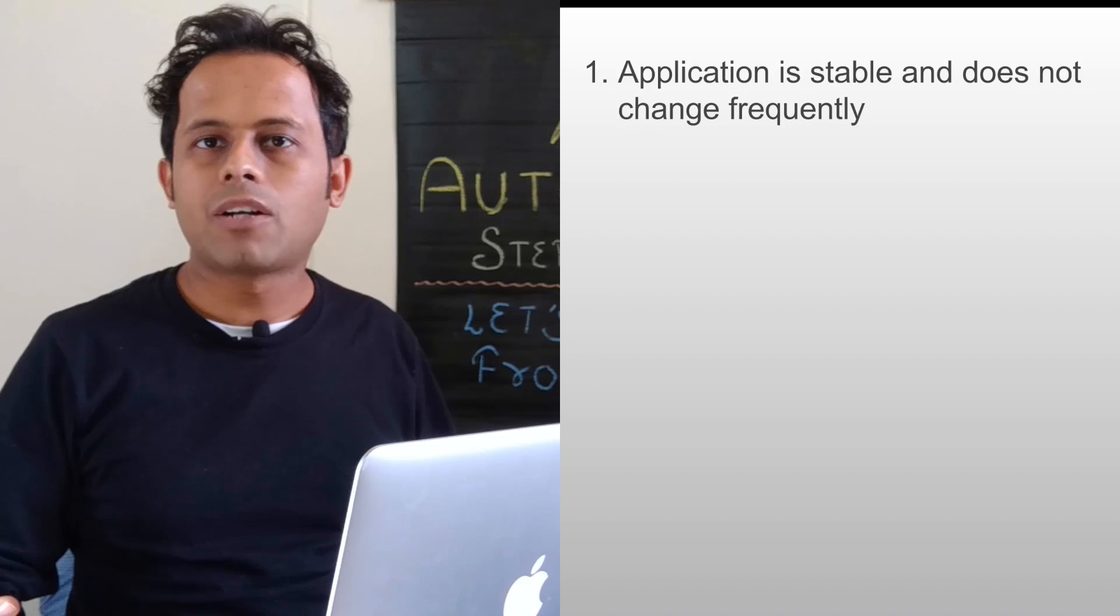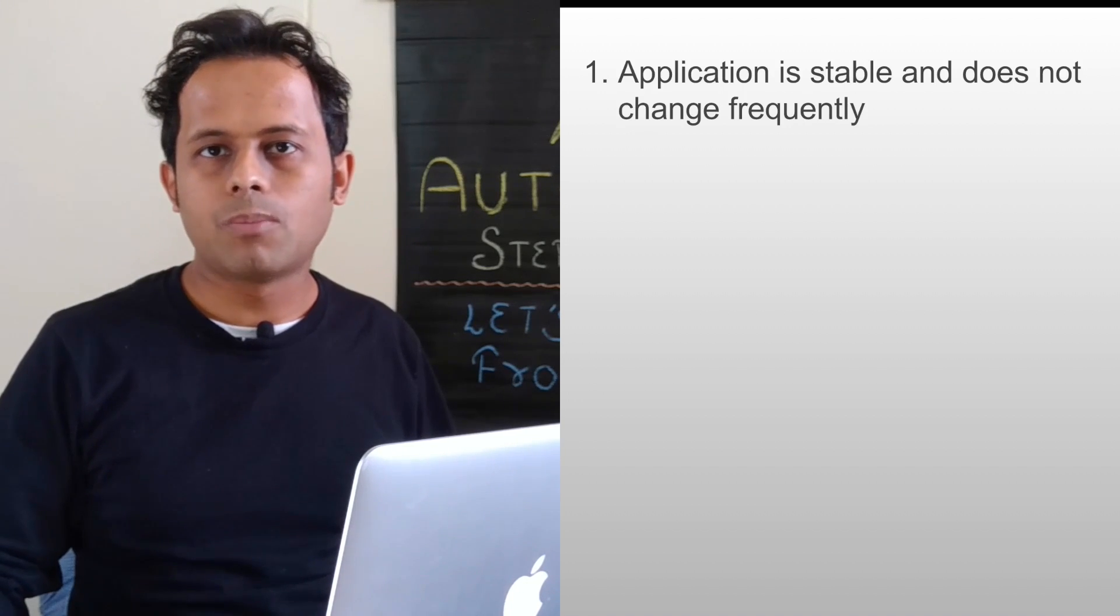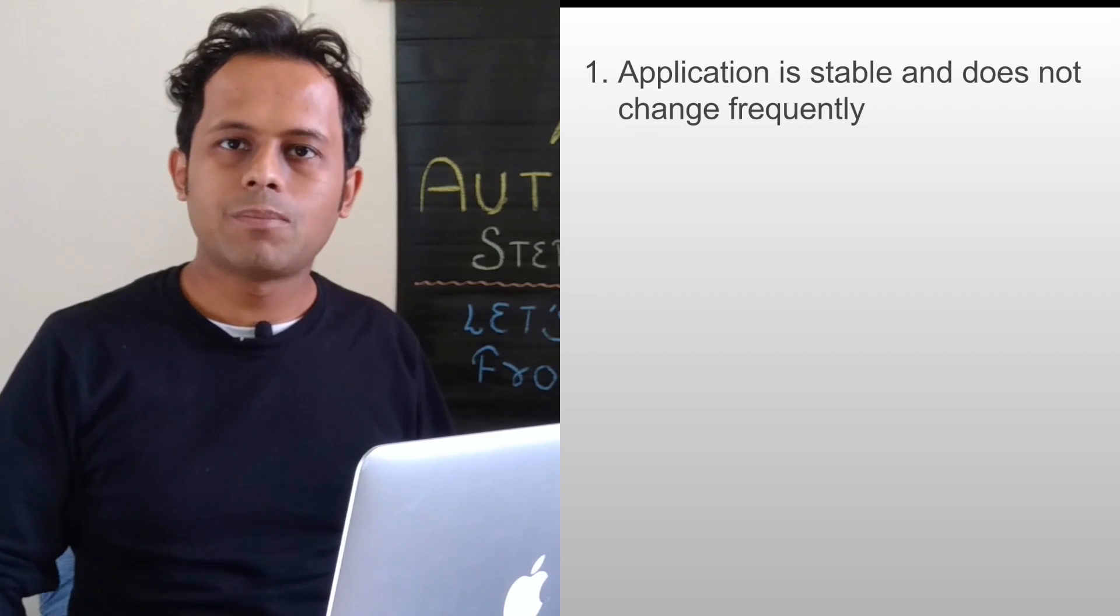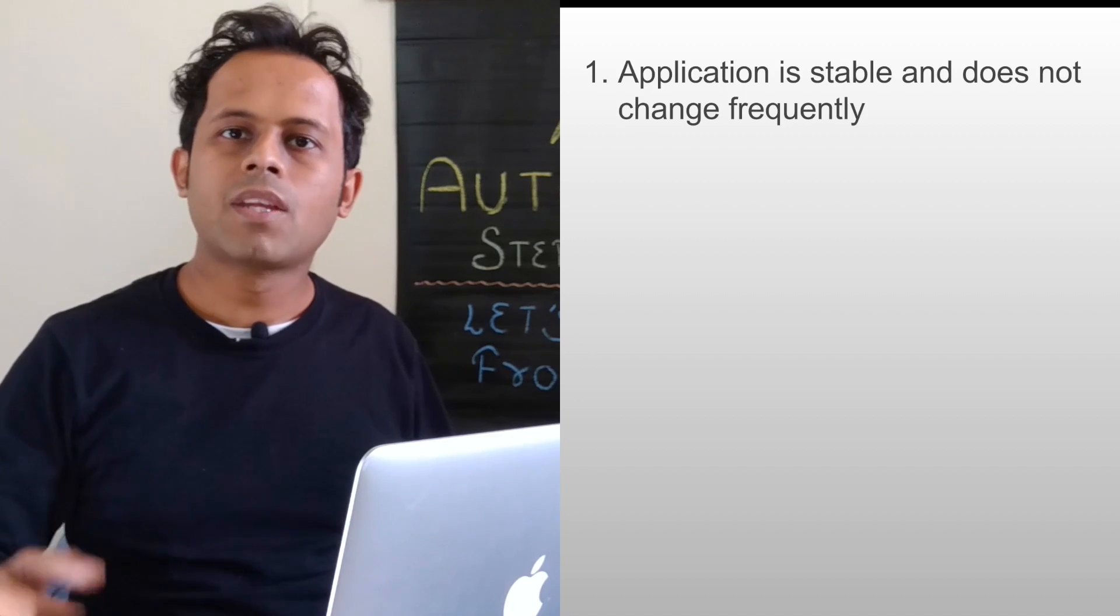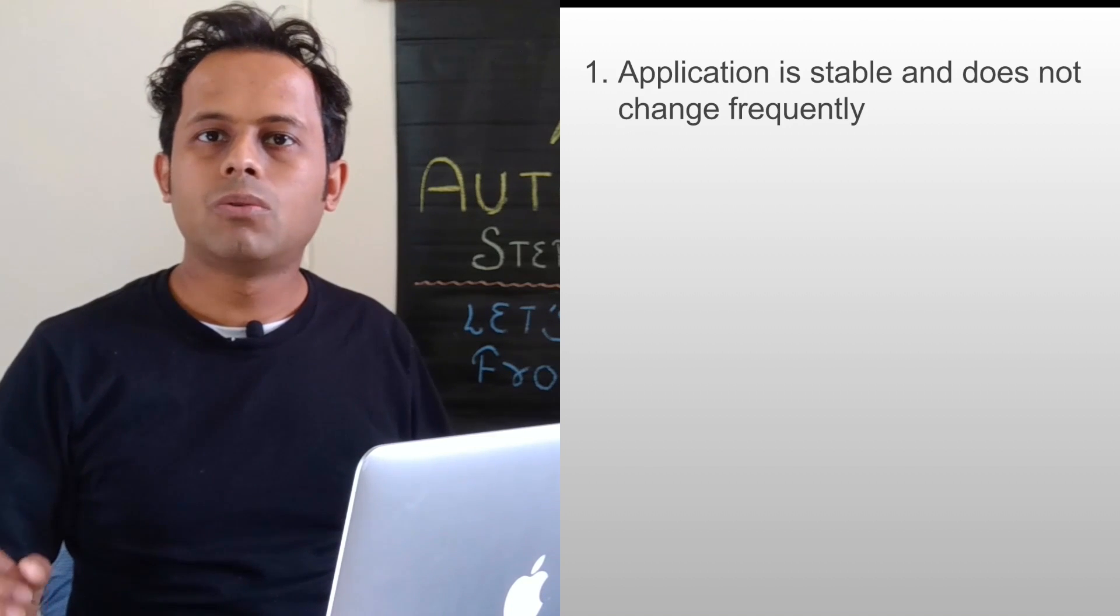Then of course we might not want to go with automation because in case you do automation parallelly then you might have to do a lot of rework and you might have to do a lot of changes with every build. So we always most of the times say that the application should be stable.